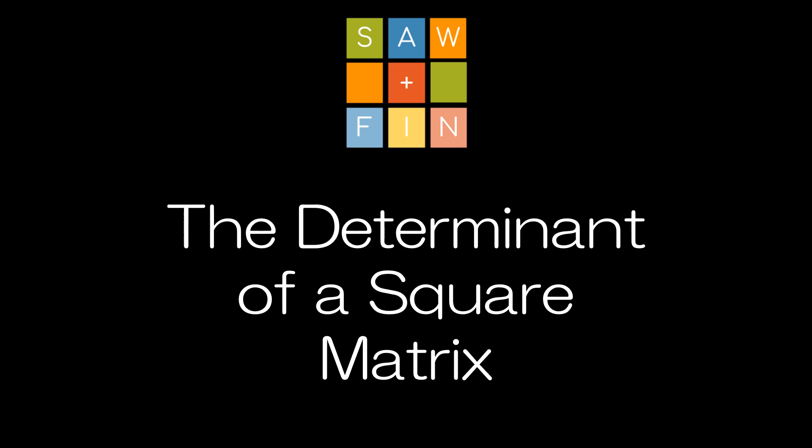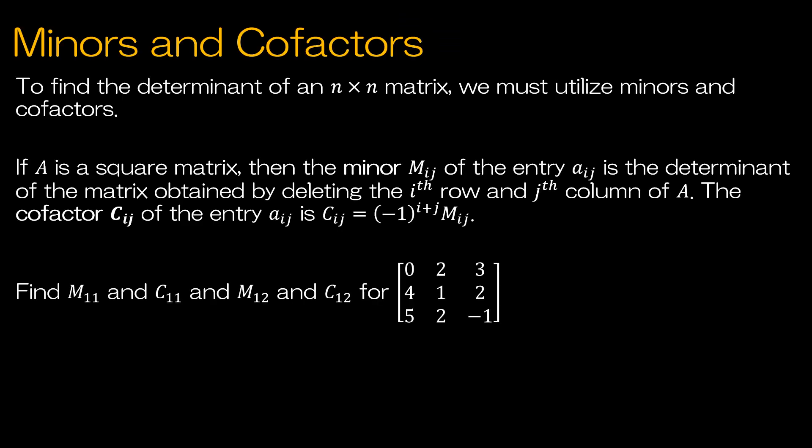Another way to find the determinant of a square matrix besides using diagonals — which isn't super useful past 3x3 and really not super helpful even with a 3x3 — is minors and cofactors. Minors and cofactors work for any size matrix, particularly when you have zeros, which is super helpful. Let's talk about how to find a minor and then the cofactor.